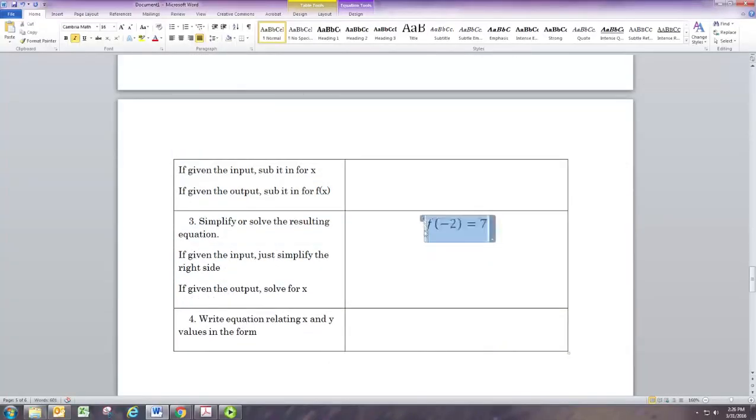So we find that when x equals negative 2, the function is equal to 7. That's the output or the y value. At the end of the day, we write f(−2) = 7.